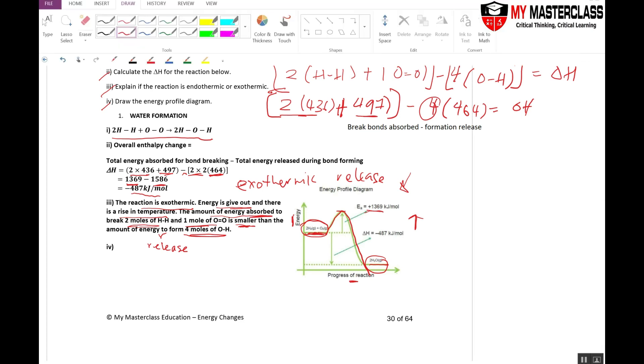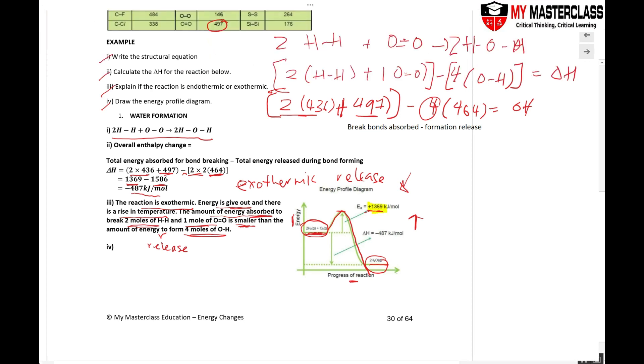It's because over here, I need to absorb it 1369. Then the reaction will proceed. And then your overall delta H is negative value. Your arrow must be downward. Negative 487 because I just counted it.